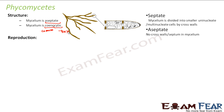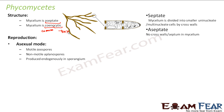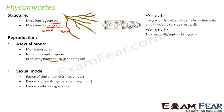In asexual reproduction, phycomycetes produce either motile zoospores or non-motile aplanospores. These are produced endogenously in a sporangium — endogenously means produced interiorly, whereas exogenously means produced externally. That is how asexual reproduction happens in phycomycetes.